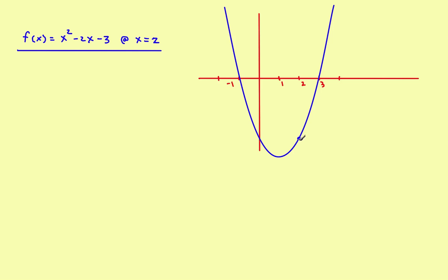To begin with, you're going to need to know what the y value is of that point. Sometimes on these problems it'll actually give it to you — it'll give you x is equal to 2, y is equal to something. But occasionally you'll run across a problem where it just gives you the x value but not the y value. So the very first thing you do, you've got to figure out what y is when x is equal to 2. Step number one: find y when x is equal to 2.